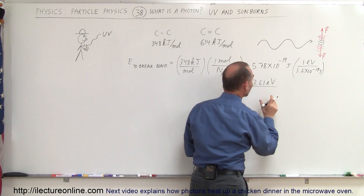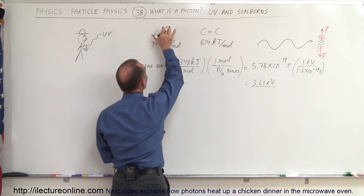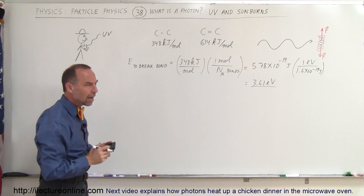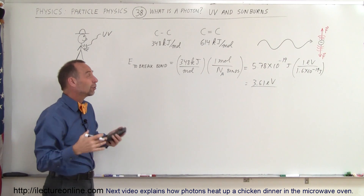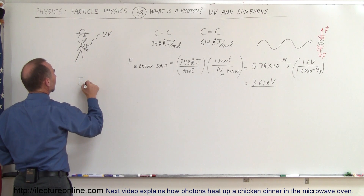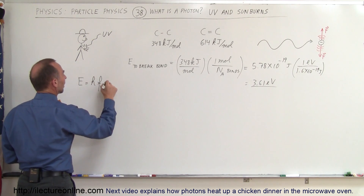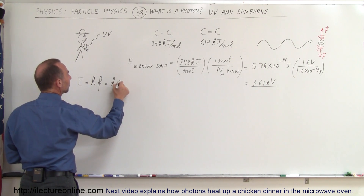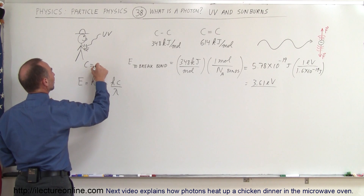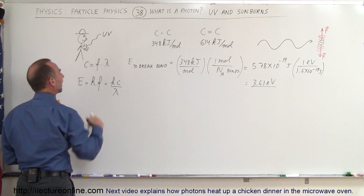If the photon contains this much energy — 3.61 electron volts — it can actually break a single bond between two carbon atoms. How does that compare to visible light or UV radiation? The energy contained within a photon equals Planck's constant times the frequency, which equals H times the speed of light divided by the wavelength, since the speed of light equals frequency times wavelength.